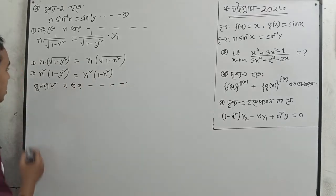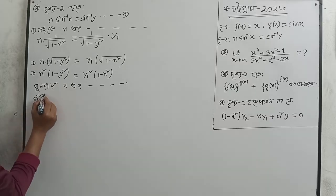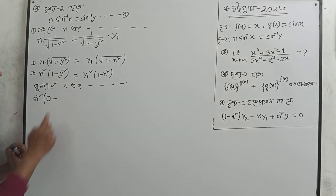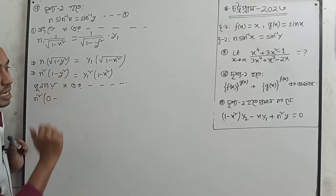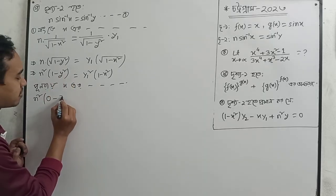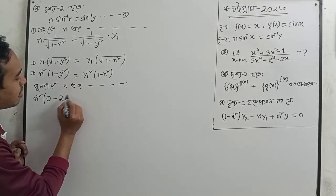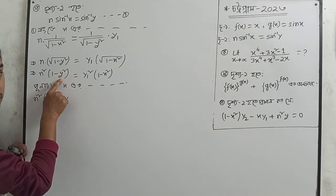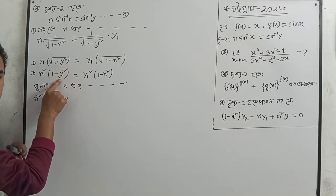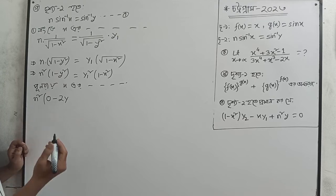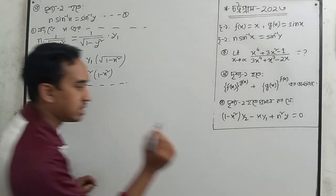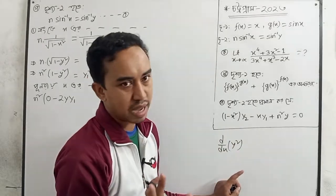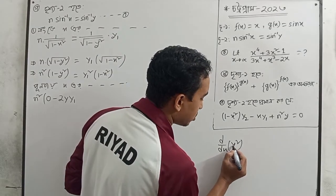Now we write n squared here. We have 1 minus 1 a-squared equal to zero, and y squared. So y is equal to x to the power n. We square y1, and use u times v. We get 1 minus x squared, then 0 minus x to the power n, and 2x, giving (1 minus x squared) times y1 squared.